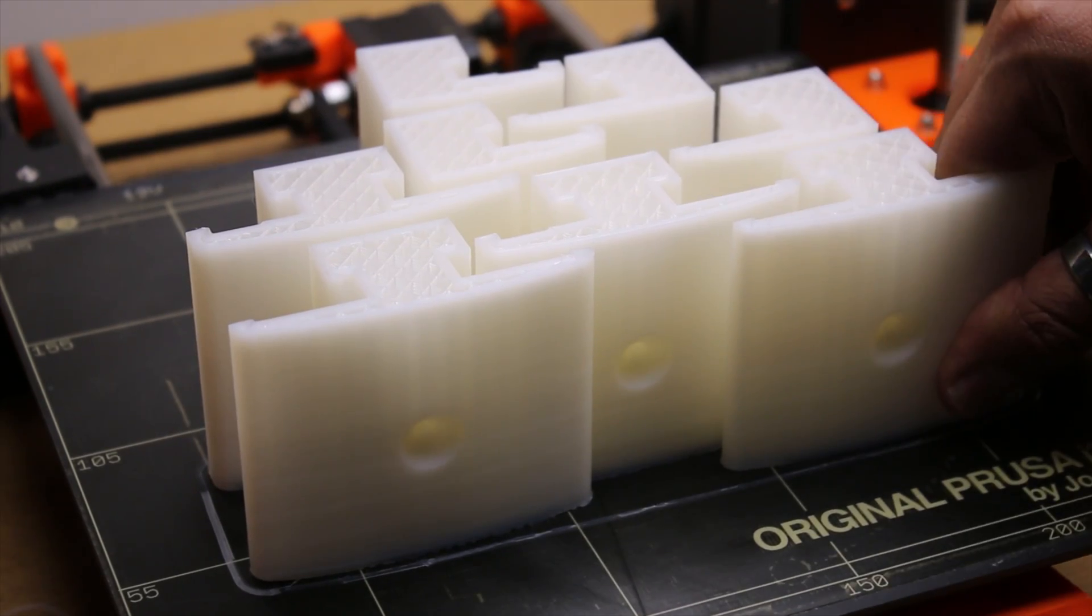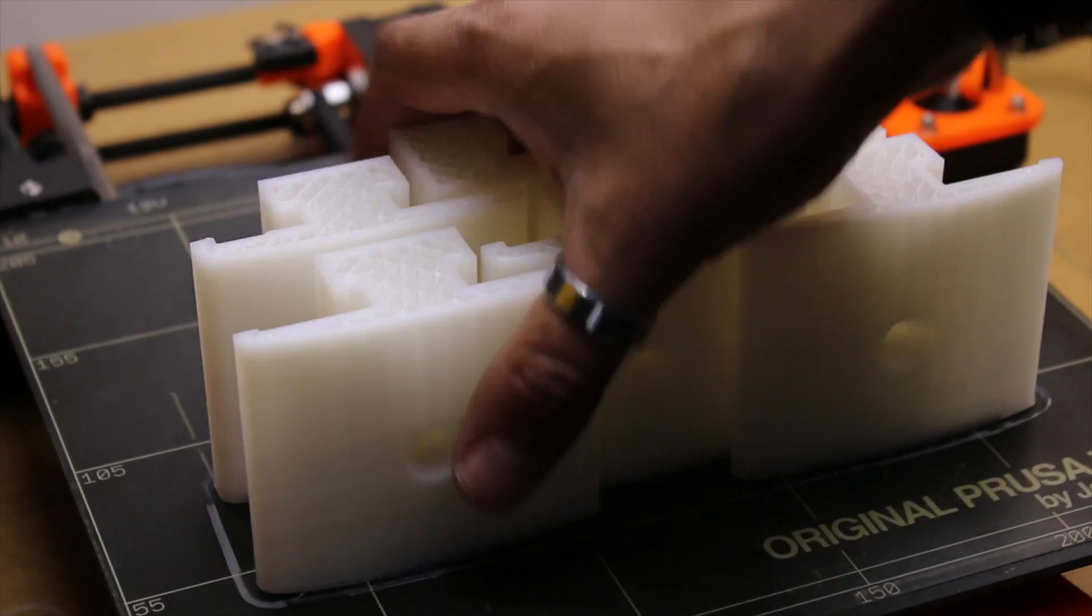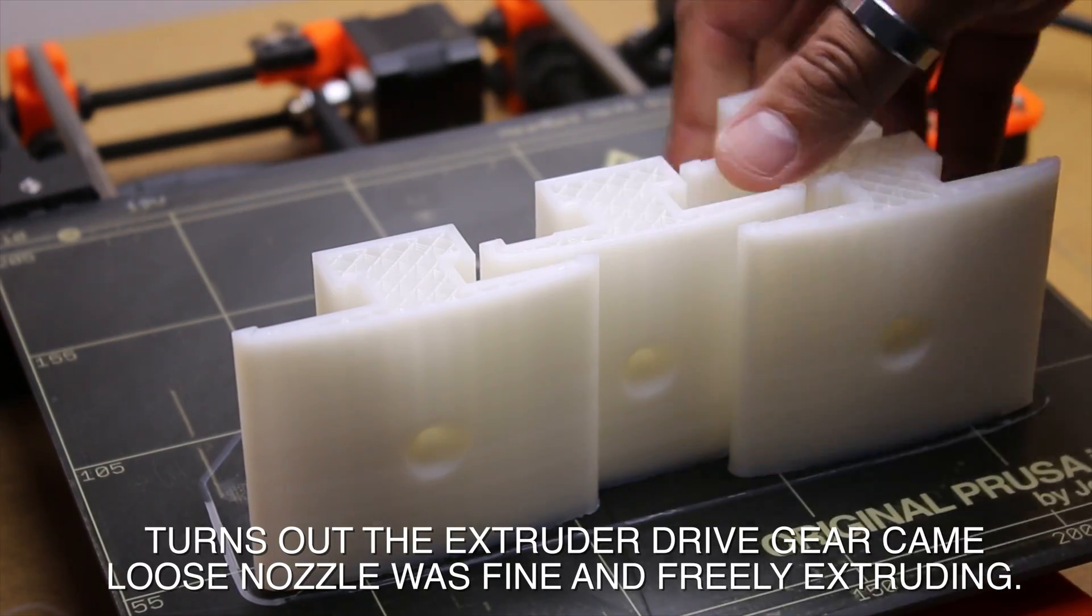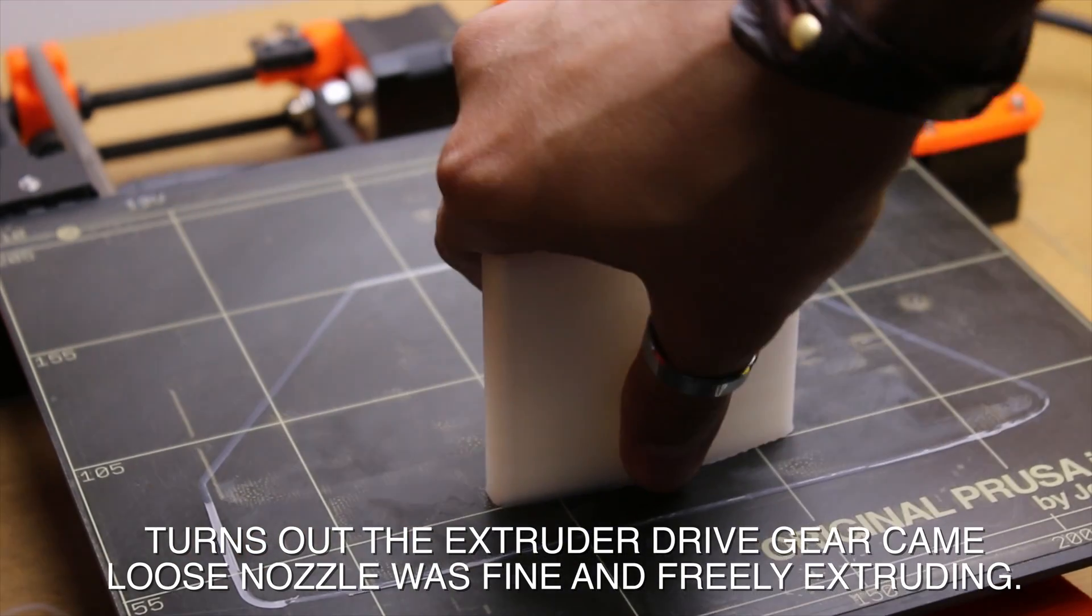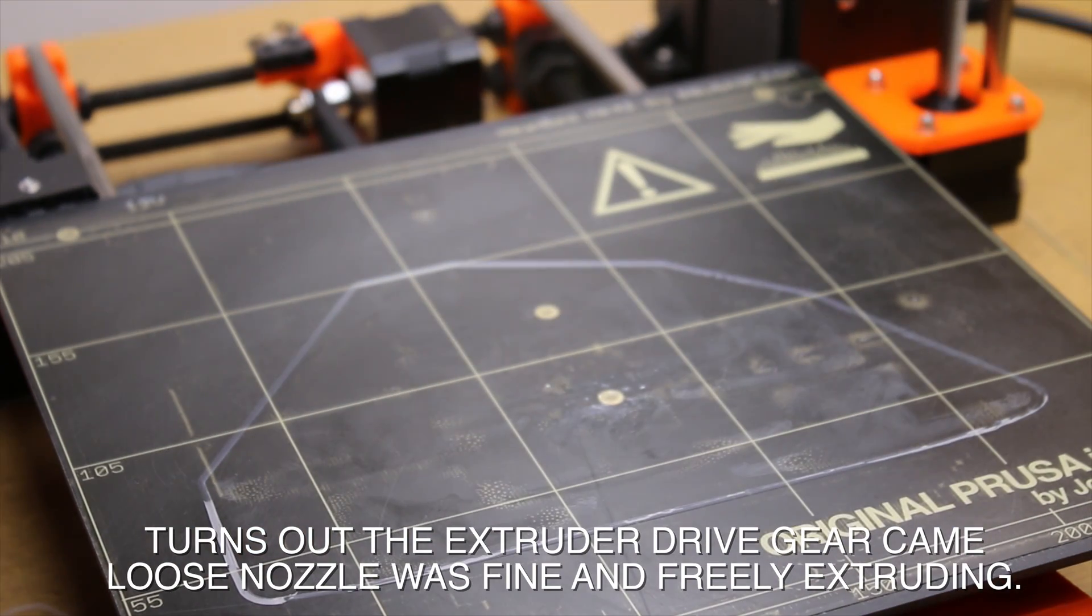It finally got to the final of the print. It printed 95% of the model before there was a nozzle block, but I'm going to carry on using these because they seem fairly rigid and really, it's going to do what it needs to do, which is hold up the light panels.